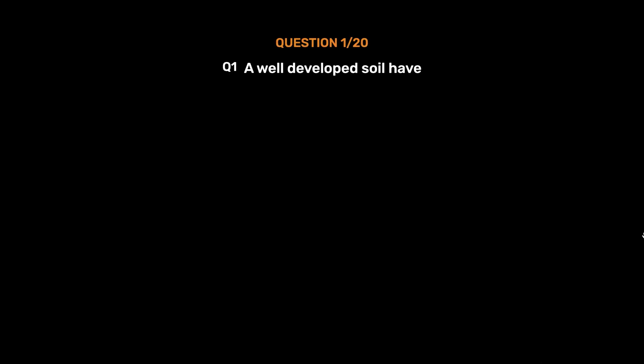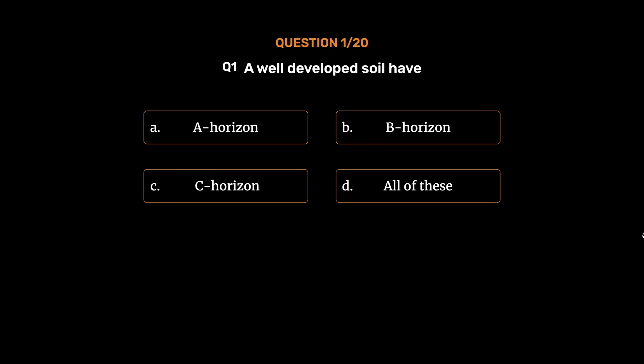Question number 1. A well-developed soil have: option A, A horizon; option B, B horizon; option C, C horizon; option D, All of these. The correct answer is option D, All of these.